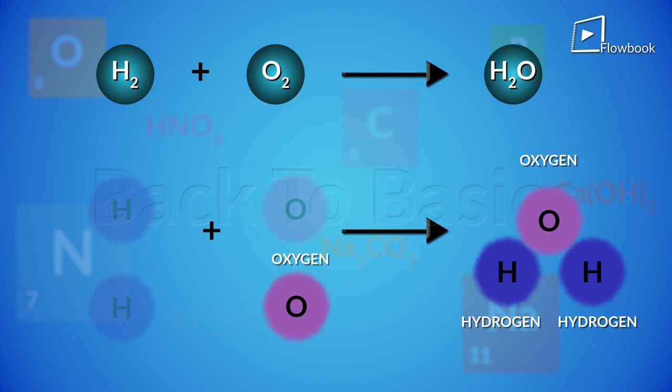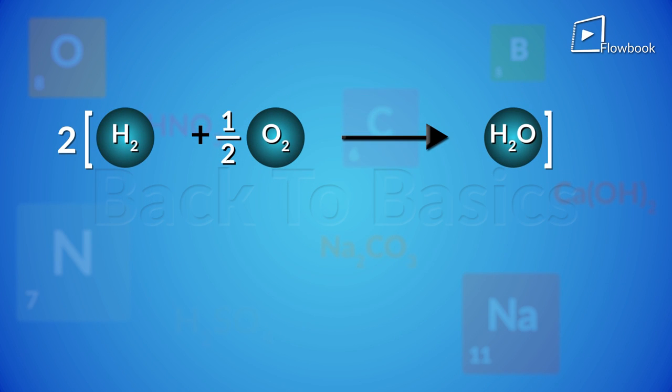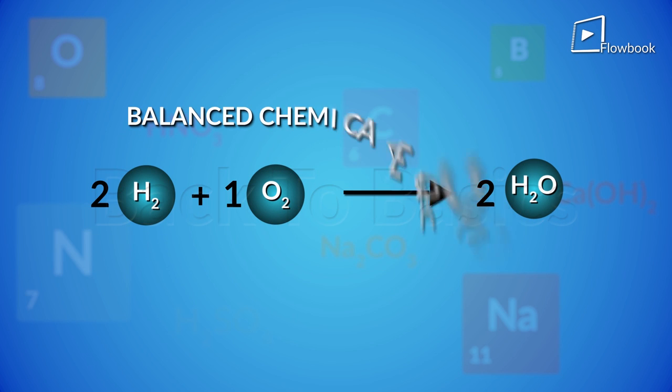So remember in early algebra we have learned that we can multiply both sides with one number. So that's what we are going to do here. Multiply this whole equation with two. So you get 2H2 plus 1O2 gives 2H2O. Now this is a balanced chemical equation.